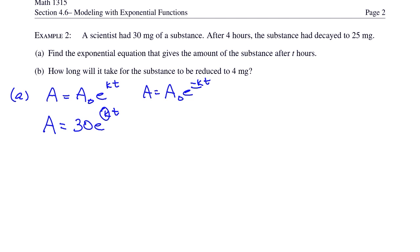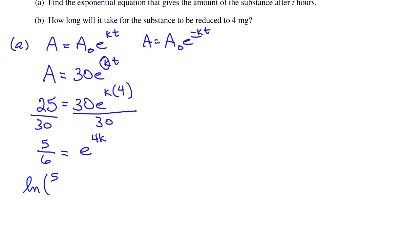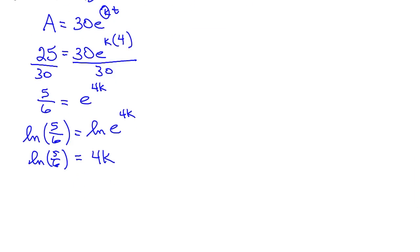And now we need to find that k value. So I'm going to plug in the other point, which was after four hours, we had 25 milligrams. So A is 25. The time element was four hours later. So 25 is equal to 30 times e to the k4. Divide both sides by 30. And that reduces to 5 sixths is equal to e to the 4k. Take the natural log. So natural log of 5 sixths is equal to the natural log of e to the 4k. Again, natural log of e to something is just that something. And so we get the natural log of 5 over 6 is equal to 4k. Solve for k. The exact value would be natural log of 5 sixths divided by 4. The decimal version would be negative 0.0456. So notice that it's negative, which indicates decay, which is exactly what we're looking for.